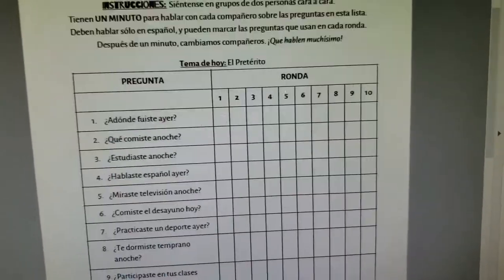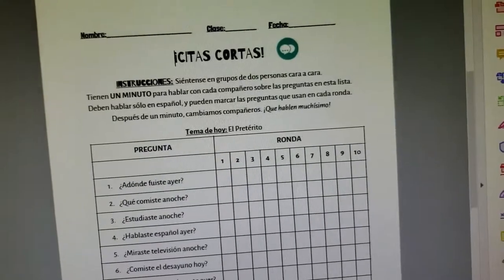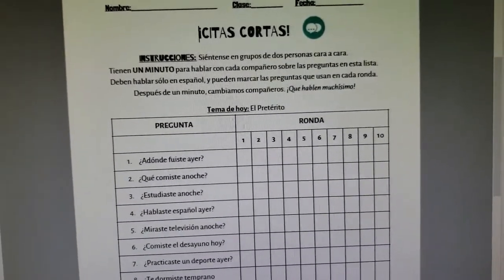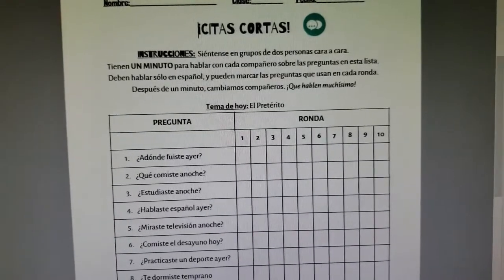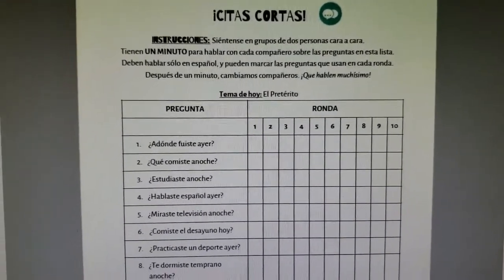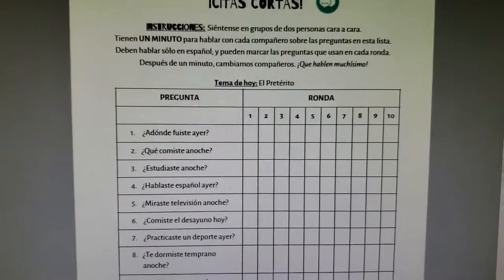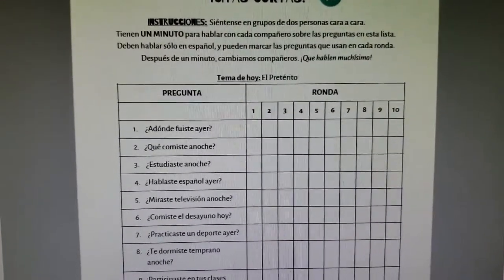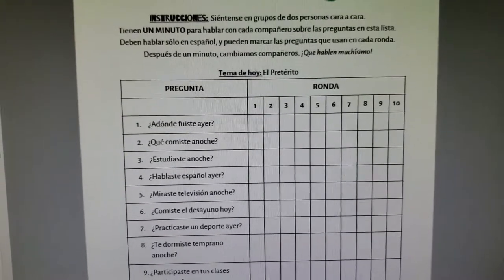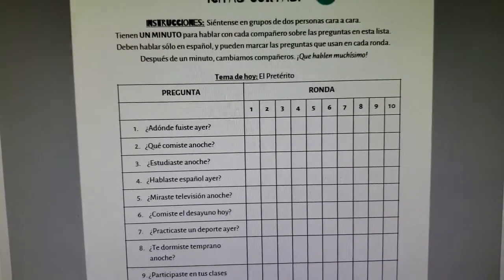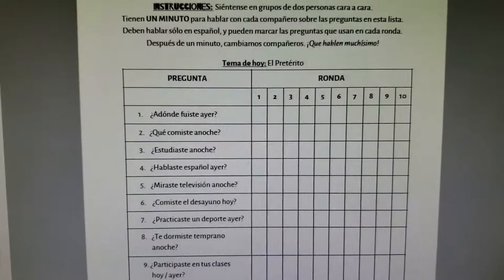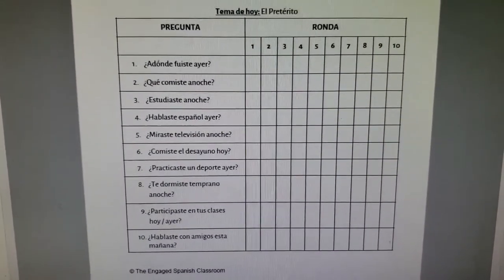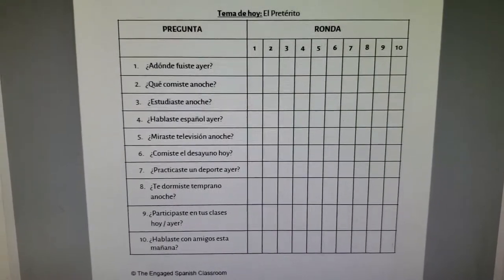Scrolling down a bit, you can see the beginning of the activity. It starts off like speed dating — you have a checklist of questions for students to use with a partner. This is a partner activity, great for interaction and speaking. Students have one minute to respond. There are 10 questions here; they check off the questions they ask their partner.